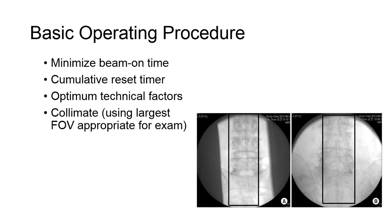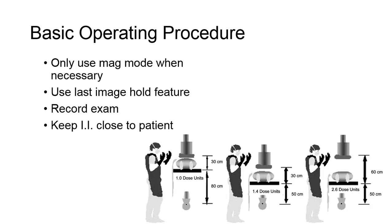Many forget to include collimation during fluoro. Limiting the beam size with the shutters visible on the TV monitor, along with selecting the largest field of view appropriate for the examination, will dramatically reduce patient dose. Magnification mode uses more radiation than the largest FOV possible, so limiting its usage to only when absolutely necessary will reduce radiation exposure.